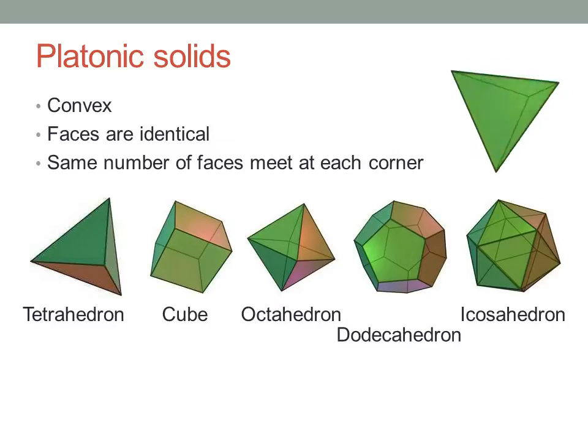The tetrahedron is made from four equilateral triangles. It's a triangular-based pyramid. Can you calculate the vertical height of a tetrahedron? It's not as easy as it sounds.